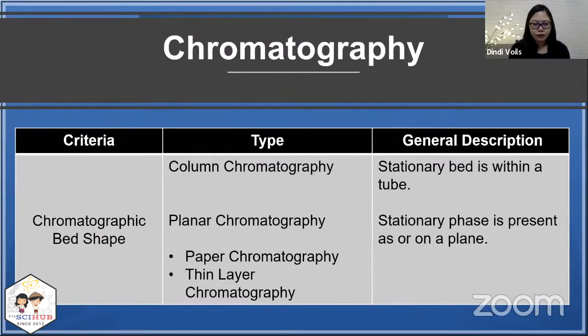The first type of chromatography is based on the chromatographic bed shape. It could be column chromatography or planar chromatography. In column chromatography, the stationary bed is within a glass tube or plastic tube, whereas in planar chromatography, the stationary phase is present as or on a plane, like your paper chromatography and thin layer chromatography.